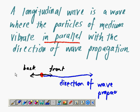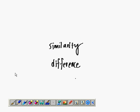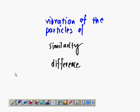So you can see that the definition can be written out quite simply by drawing diagrams, and the similarity between transverse wave and longitudinal wave is the vibration of the particles. Both of them have particles to vibrate, and the difference between them is actually the direction. One is perpendicular, and another one is longitudinal.